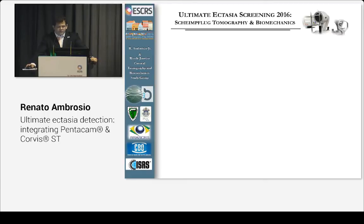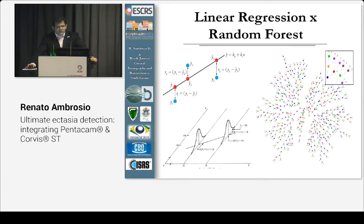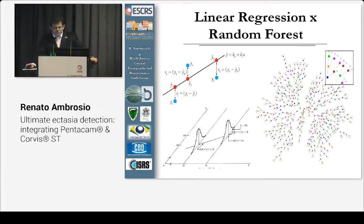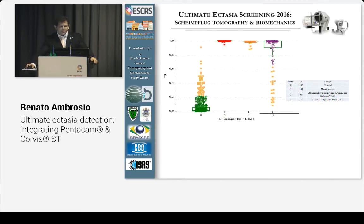To detect those cases, we have to go beyond topography and tomography — we have to understand artificial intelligence. We performed linear regression analysis and also a sophisticated method called random forest, which generates many different decision trees to reach a final decision. We have a lot of data to analyze and our brain has limited capacity to process it all. So we learn, and we have to make the machine learn more. We transmit our clinical knowledge to the computer so it can be trained and help us make clinical decisions. This is the dot plot of the TBI, which combines tomographic data — going well beyond the BAD-D — with the biomechanical measurements.